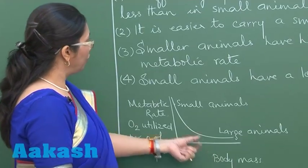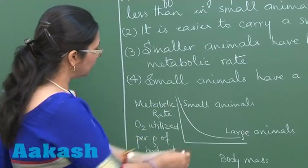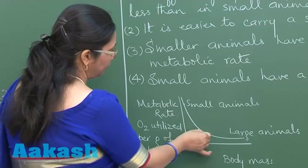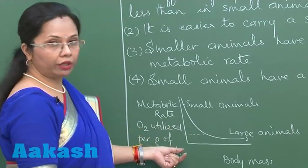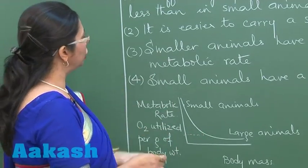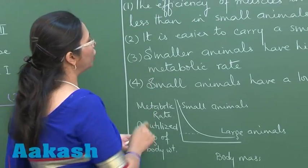Smaller animals have higher metabolic rate, and that is why they can efficiently climb.